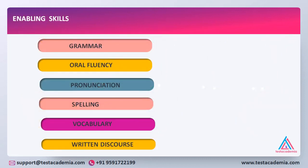Through these four communicative skills — listening, reading, writing and speaking — you are basically being tested on your enabling skills of grammatical range and accuracy, oral fluency, pronunciation, spellings, vocabulary and written discourse. Through different question types, you will be tested on each of these enabling skills.